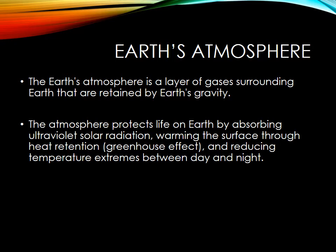The atmosphere protects life on Earth by absorbing ultraviolet solar radiation, which warms the Earth's surface through the greenhouse effect. The greenhouse effect is what keeps heat towards Earth. The atmosphere also reduces temperature extremes between day and night. Other planets that don't have an atmosphere have really hot days and really cold nights, and we would not be able to survive on those planets.